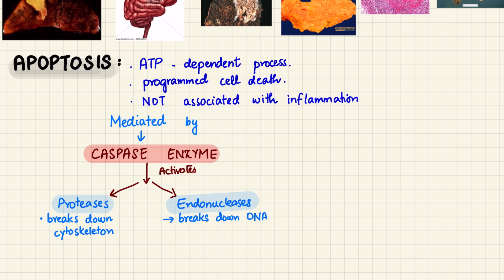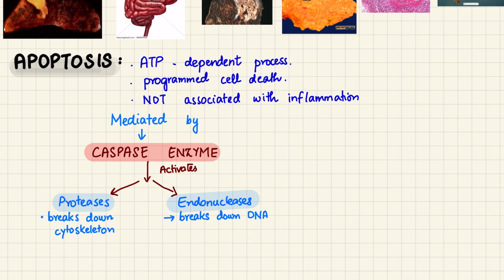Finally, apoptosis is a graceful, programmed way for the cell to die — the cell plans its own death. It is an ATP-dependent process and is not associated with inflammation. It is mediated by caspase enzymes, which activate proteases and endonucleases that break down the cell cytoskeleton and DNA respectively.